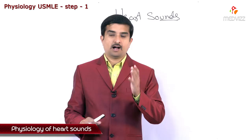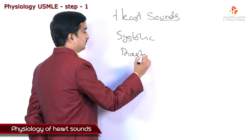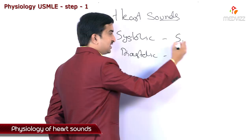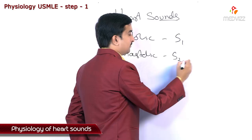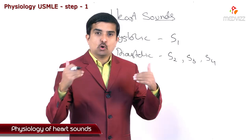Let's begin about physiology of heart sounds. Heart sounds are of two types: systolic heart sounds and diastolic heart sounds. Only the first heart sound, S1, is the systolic heart sound, but S2, S3, and S4 are the diastolic heart sounds. Generally, these sounds are produced because of the closure of the valves, not because of the opening of the valves.